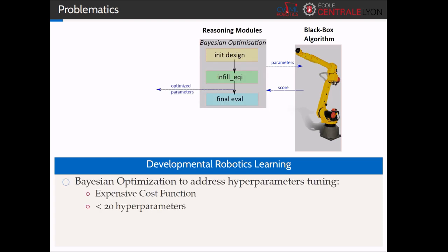One of the methods of choice for hyper-parameter tuning is Bayesian optimization. It is especially suited when the cost function is expensive and noisy, which is usually the case in robotics applications, under the condition that the number of parameters is limited.